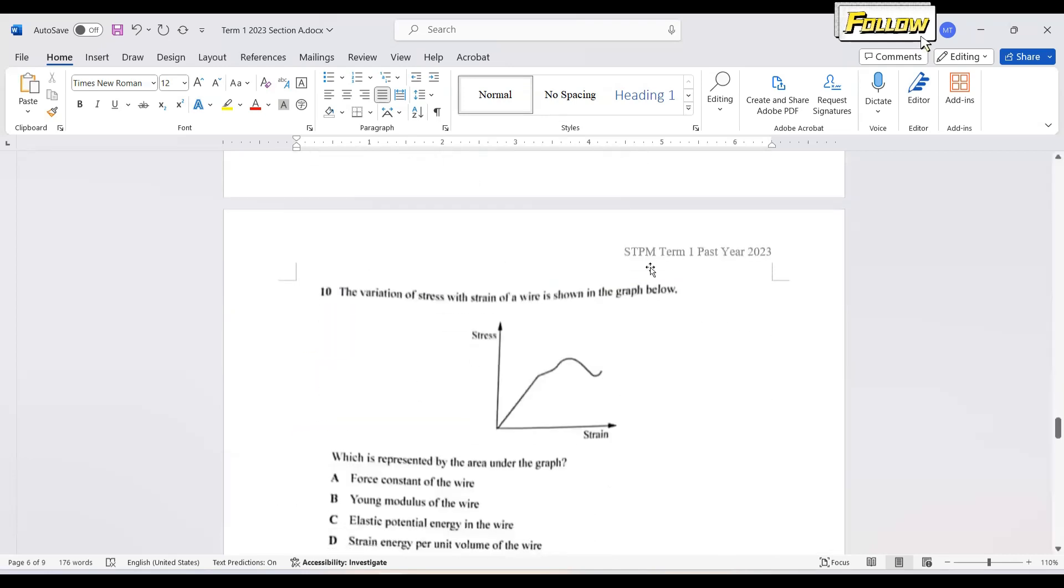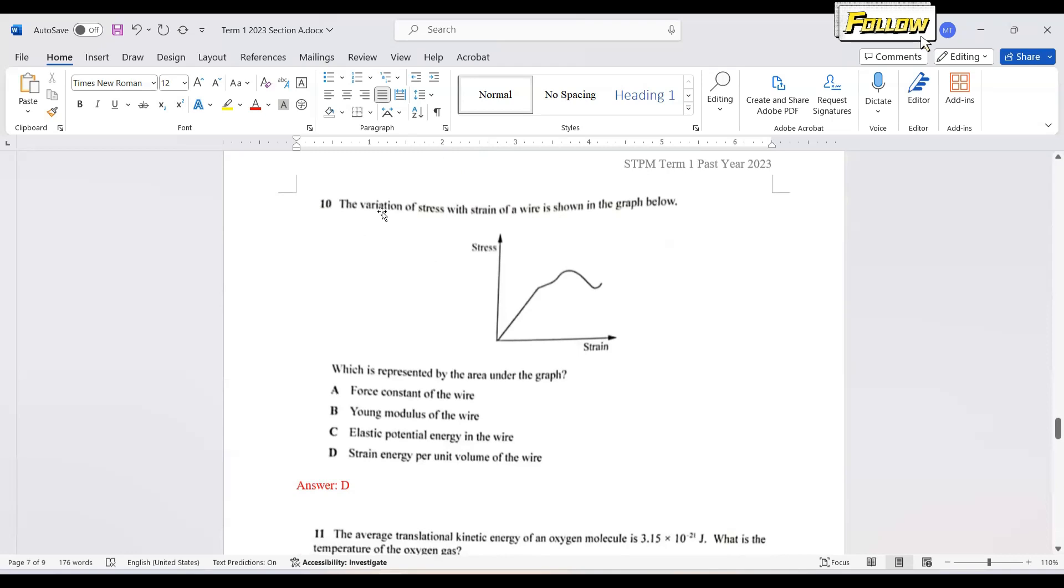Move on to question 10. Variation of stress with strain of a wire is shown in the graph. What is the area under the graph? It should be also easy since it is in the syllabus. The answer is strain energy per unit volume of the wire. You can also revise how we can do the derivation to prove that the area under the graph is the strain energy per unit volume.